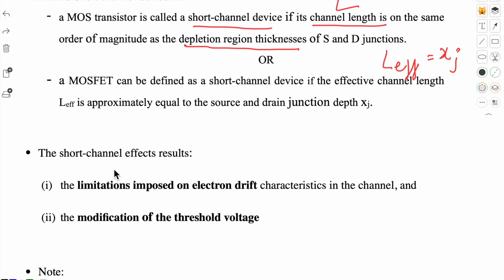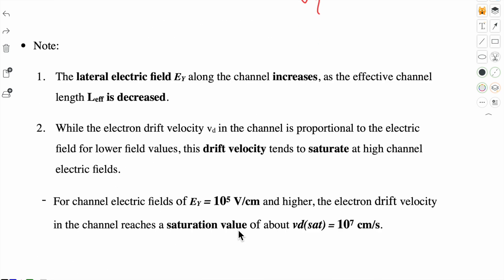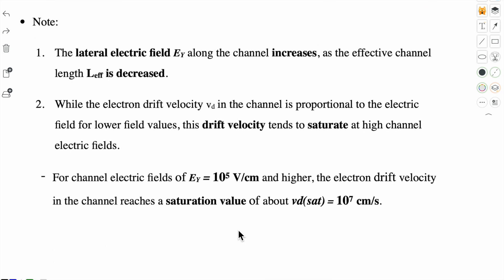There are two important physical phenomena due to this short channel effect. The first one is it imposes limitations on electron drift characteristics, and it will modify the threshold voltage. That means the drain current and threshold voltage are going to vary in a short channel device. We will study one by one what effects are happening on drain current and threshold voltage.